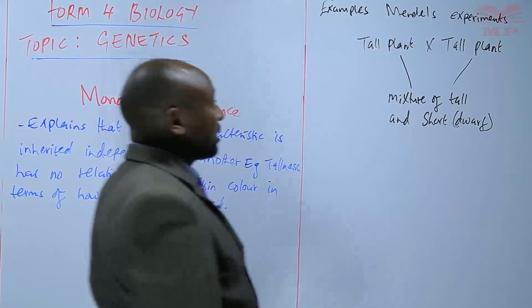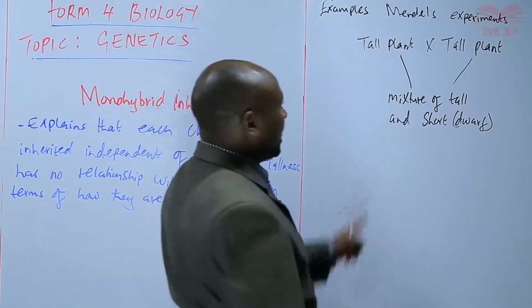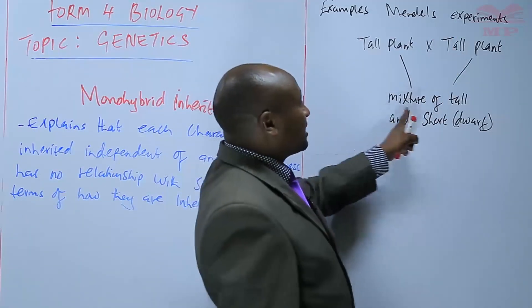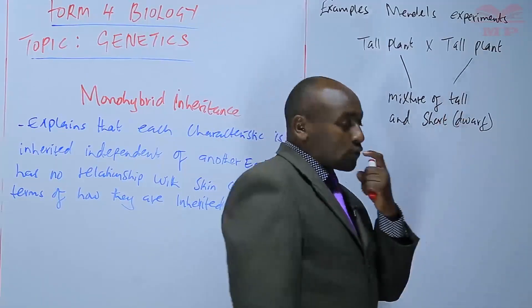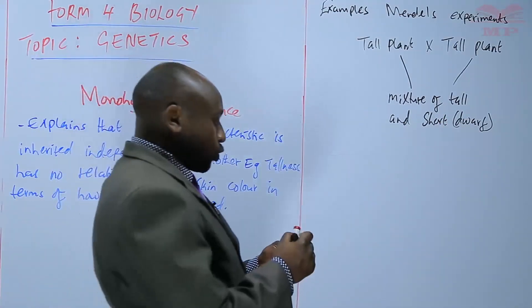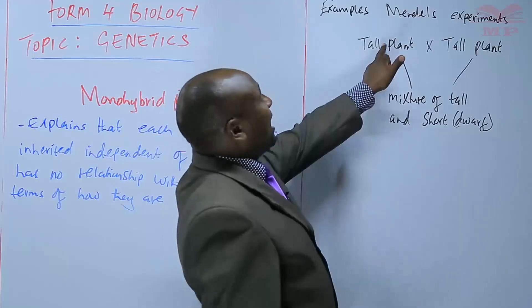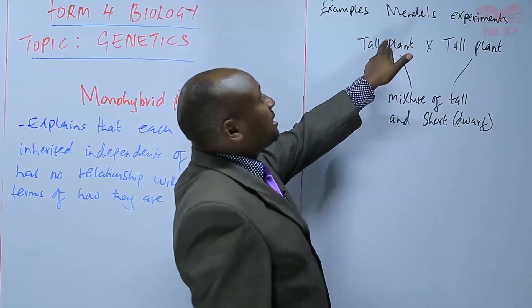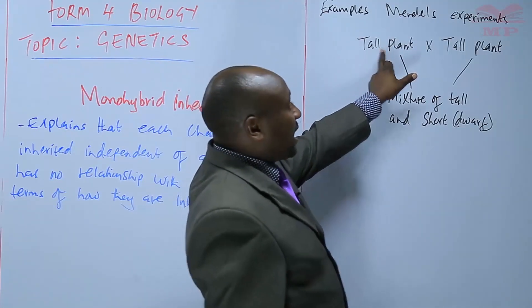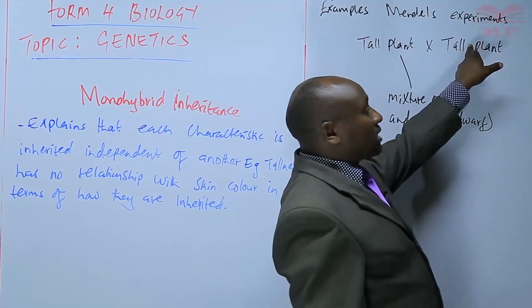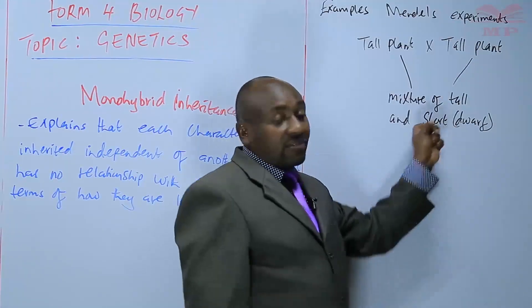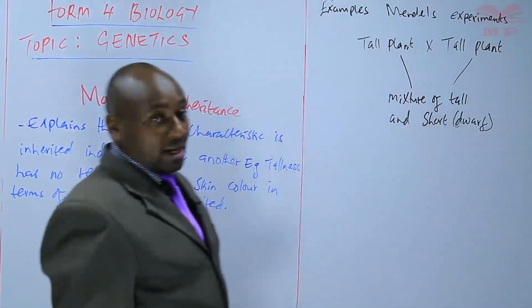So by crossing a tall plant and a tall plant, we are getting a mixture of tall and short. The conclusion is that there are some traits of shortness in these tall plants, and that is why we are getting the dwarf plants.